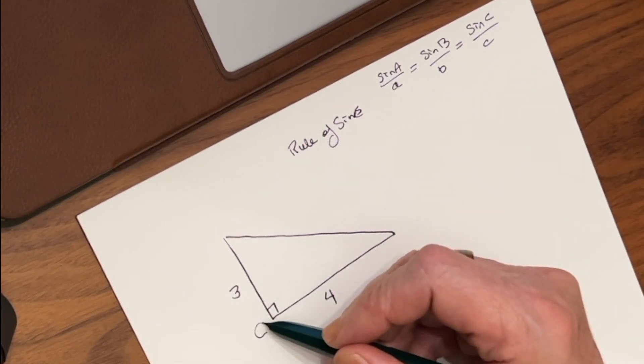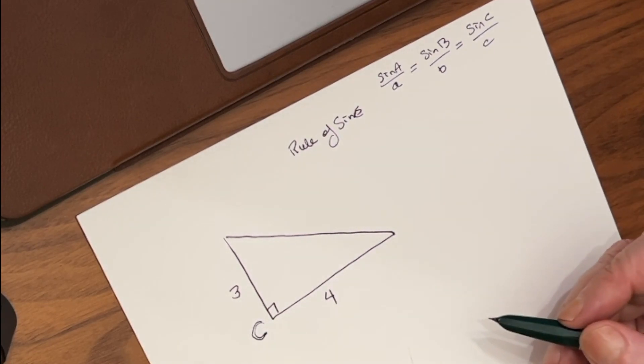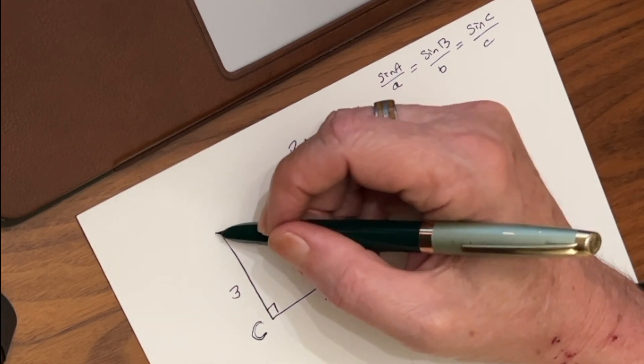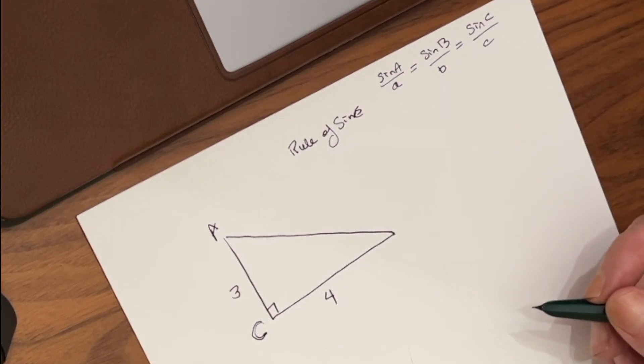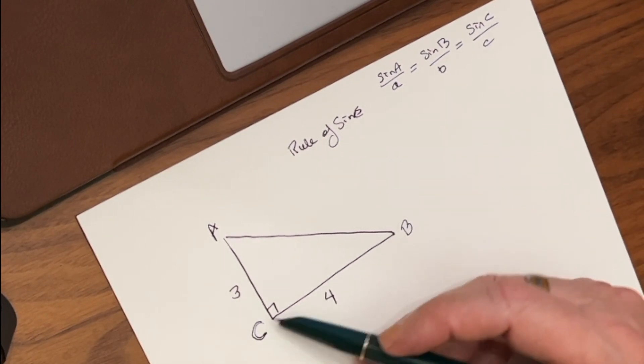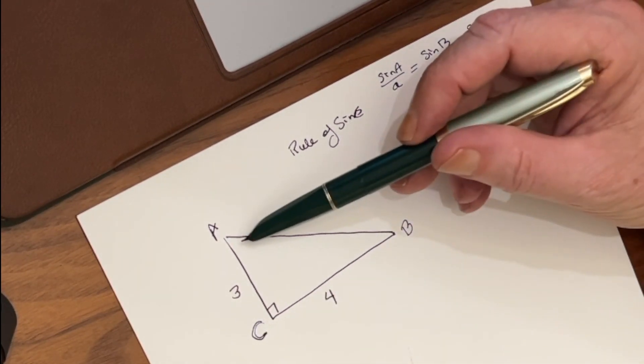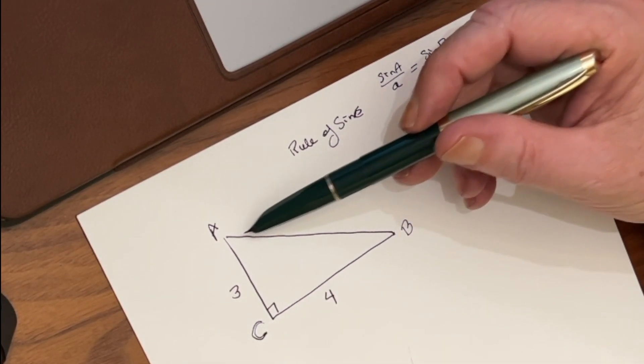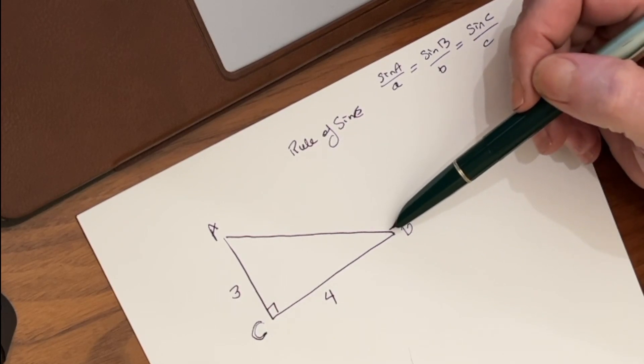As you recall, the right angle is always a capital letter C. The next largest angle will be A, and the smaller of the two angles will be B. So when you have a right triangle, you're going to have one angle that's more than 45 degrees, and you're going to have one angle that's less than 45 degrees.